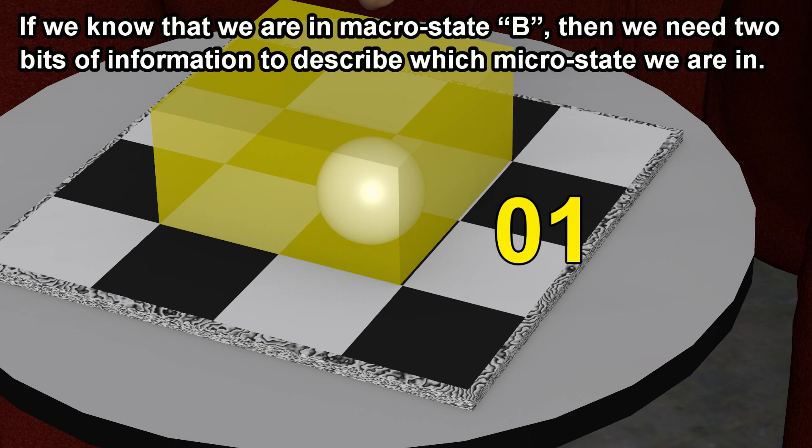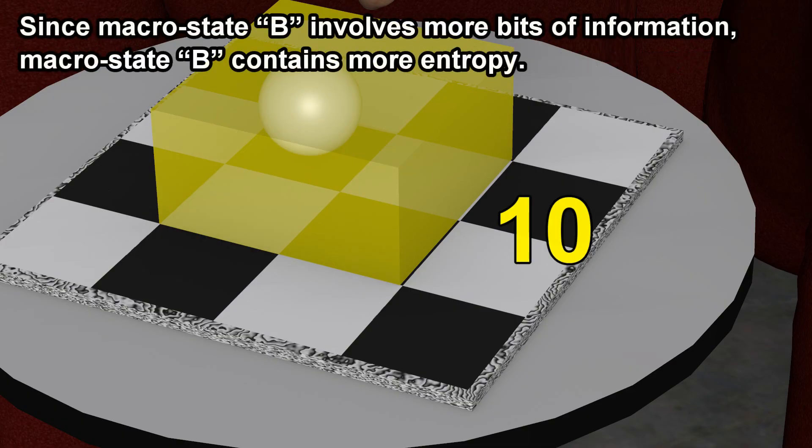If we know that we are in macrostate B, then we need two bits of information to describe which microstate we are in. Since macrostate B involves more bits of information, macrostate B contains more entropy.